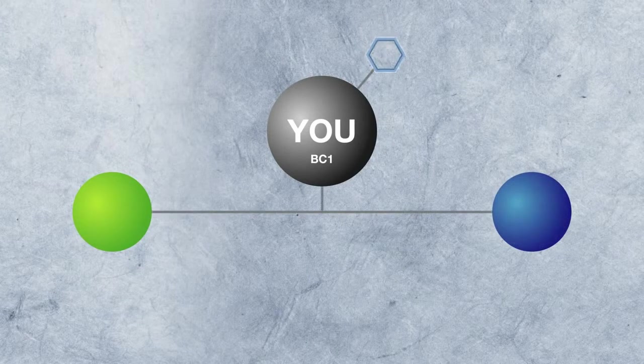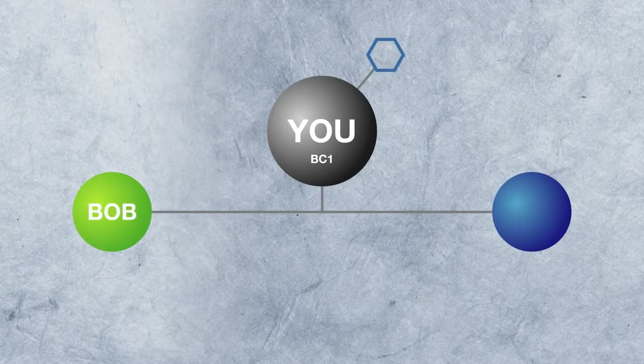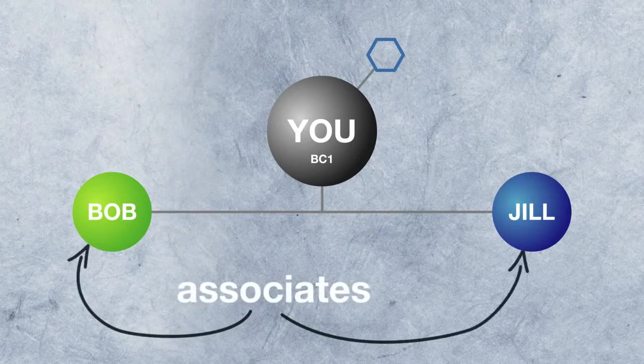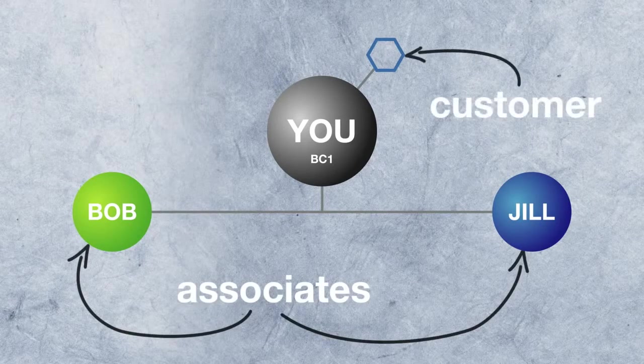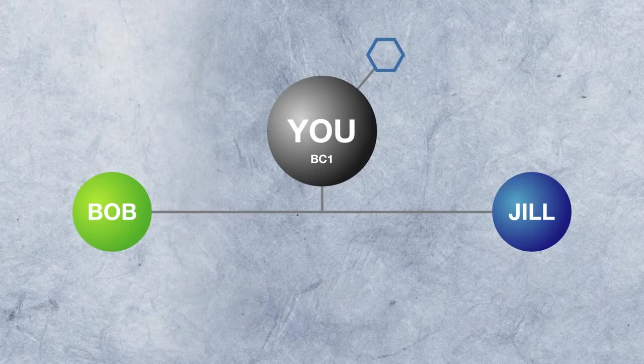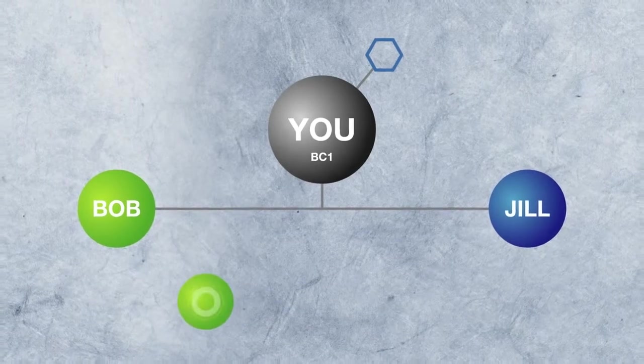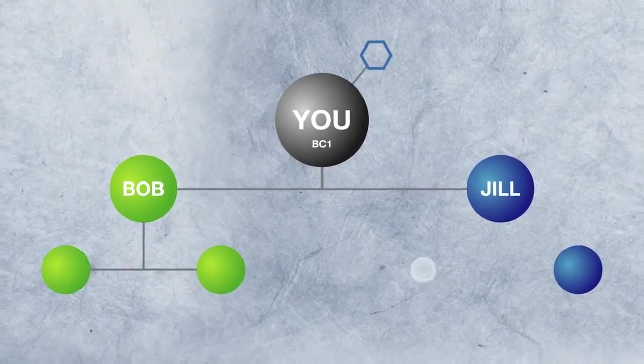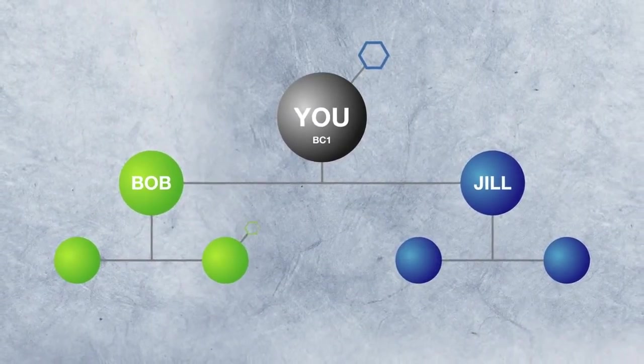As you begin sharing USANA and enrolling customers and associates, you'll place them on your left or right side. Maybe Bob is a co-worker, maybe Jill is a neighbor. They become USANA associates and join your team because they love the products and want to make some extra money. Once they open their business centers, they can enroll their own customers and associates. This structure creates teamwork, stability, and growth in your business.